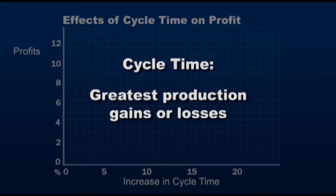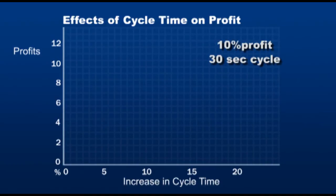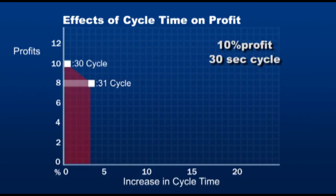Cycle time is where the greatest production gains or losses are incurred. Here is an example of the costs of cycle time. On this job, we are quoting to make a 10% profit on a job with an estimated 30-second cycle time. If this job is run at a 31-second cycle, it will require just over 3% more machine hours to complete. At a cycle time of 32 seconds, 7% more machine hours are required.